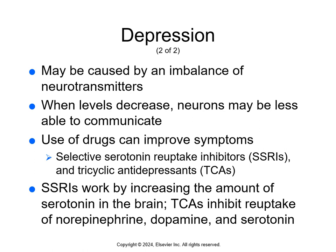Neurotransmitters like serotonin, dopamine, and norepinephrine assist with the communication between neurons in the brain. When neurotransmitter levels decrease or become imbalanced, neurons may be less able to communicate with each other, which can lead to depression and other mood changes. We use drugs to improve the symptoms. The two most common groups of drugs used to treat depression are selective serotonin reuptake inhibitors (SSRIs) and tricyclic antidepressants (TCAs). SSRIs have fewer side effects and are more commonly used. It can take as long as eight weeks for symptoms of depression to improve, so it's necessary to encourage patients through that period.